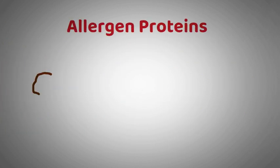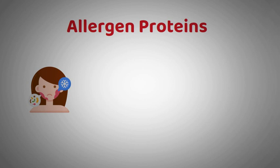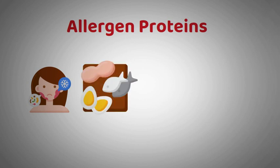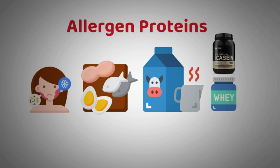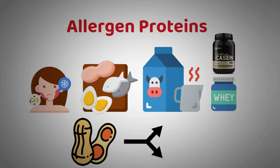Allergen proteins: Food allergies are primarily triggered by specific proteins in these foods. For example, cow's milk allergy is typically triggered by proteins like casein and whey, while peanut allergies are often caused by proteins such as Ara h 1 and Ara h 2.